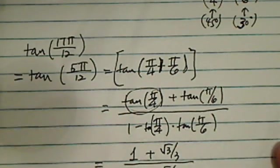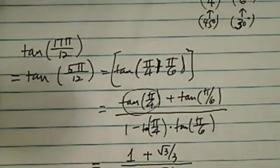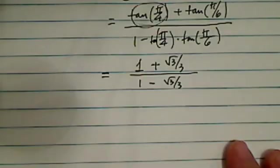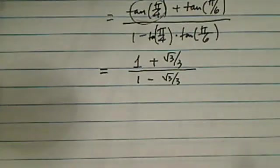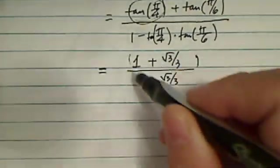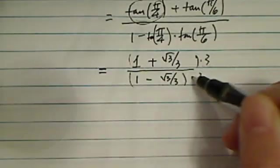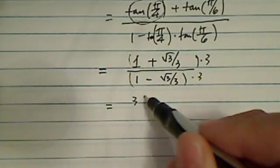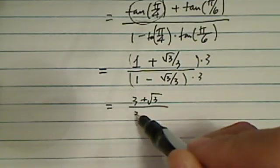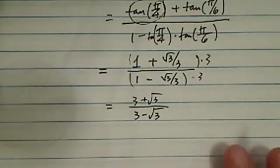So if you multiply 3 top and bottom, let me move this up a little bit. Over here, I multiply top and bottom by 3. You'll see that this is equal to 3 plus radical 3 divided by 3 minus radical 3.